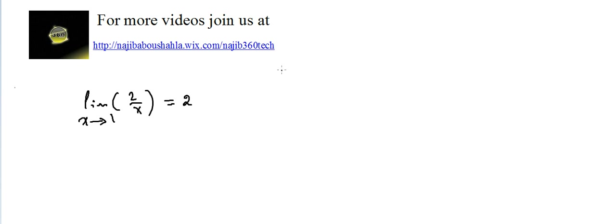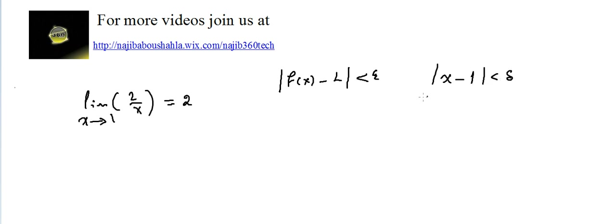We know that the absolute value of f(X) minus L should be less than epsilon, to ensure that the absolute value of X minus 1 is less than Delta. So we have to find a certain Delta that ensures exactly that.